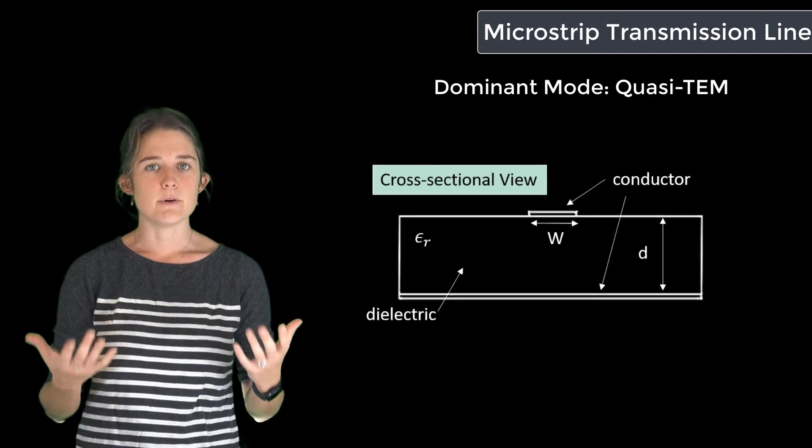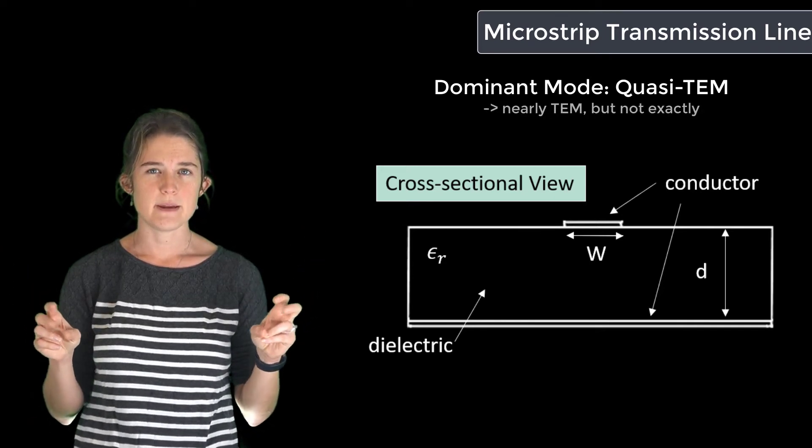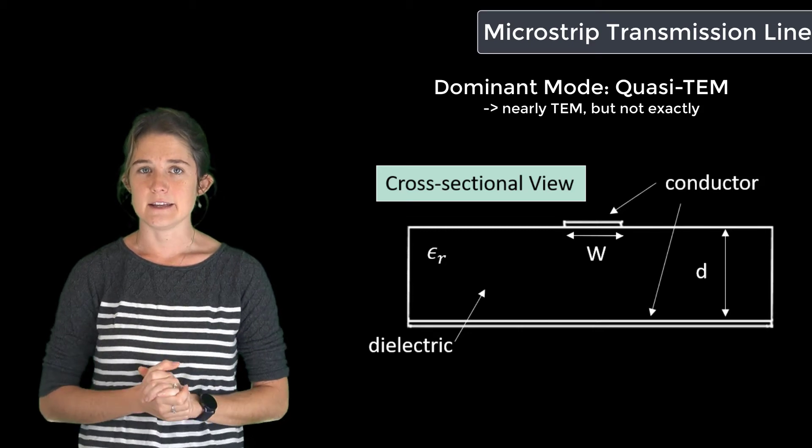In this case, the dominant mode of this transmission line is called quasi-TEM, meaning that it is very like a TEM wave, but technically it's not exactly a TEM wave.